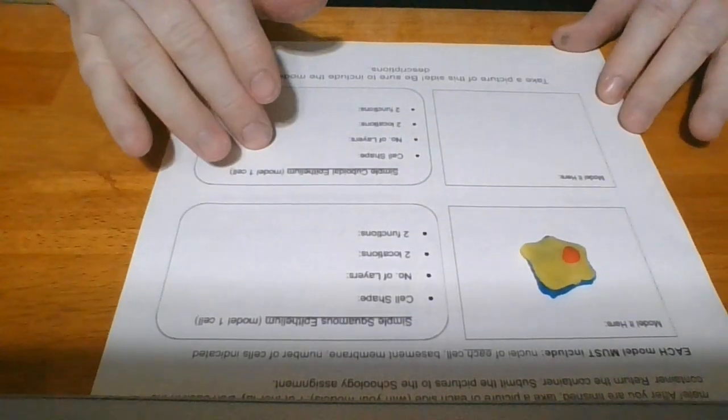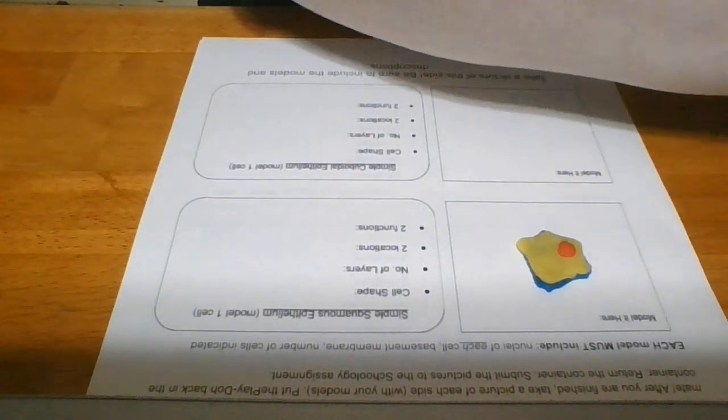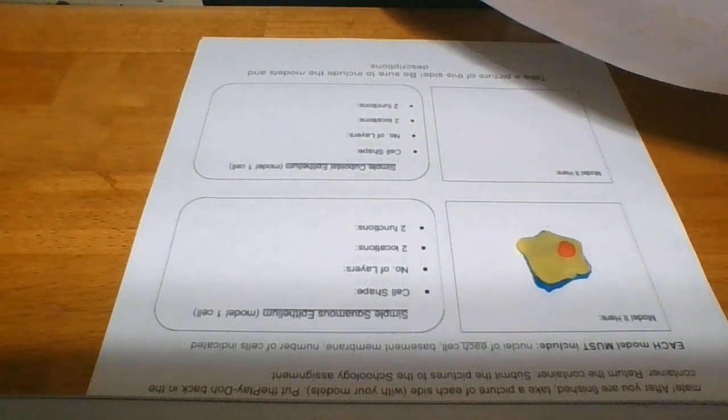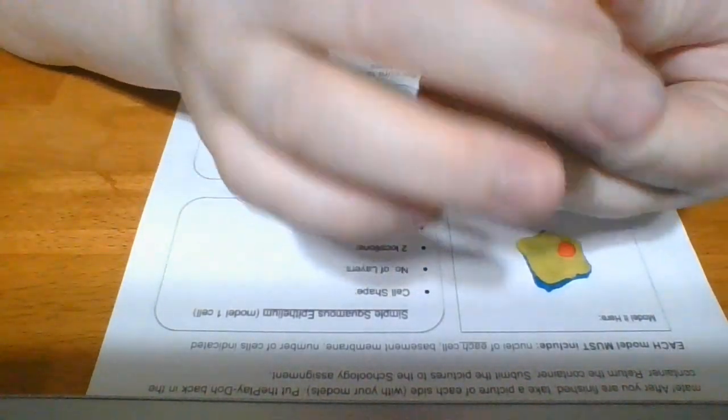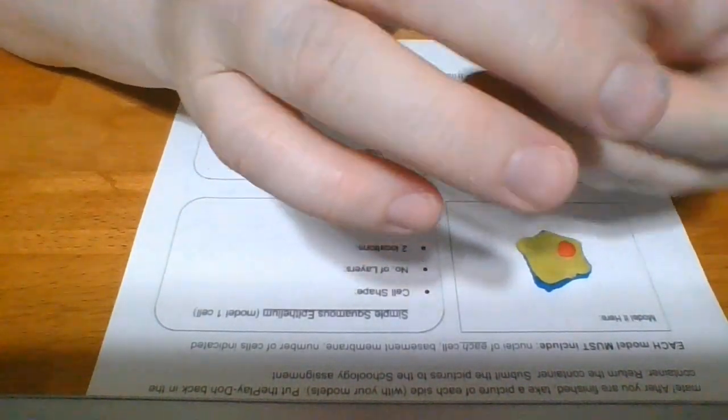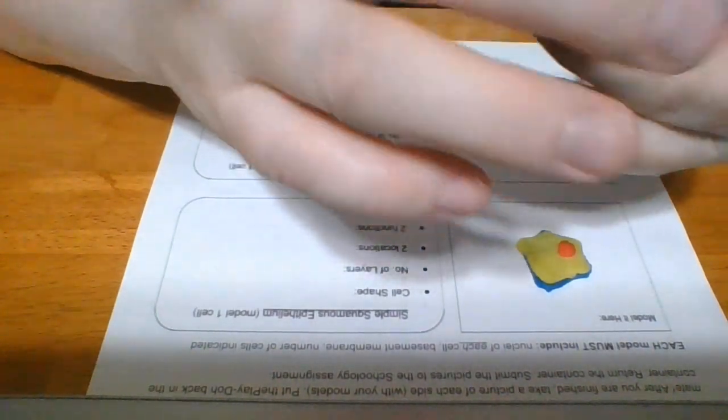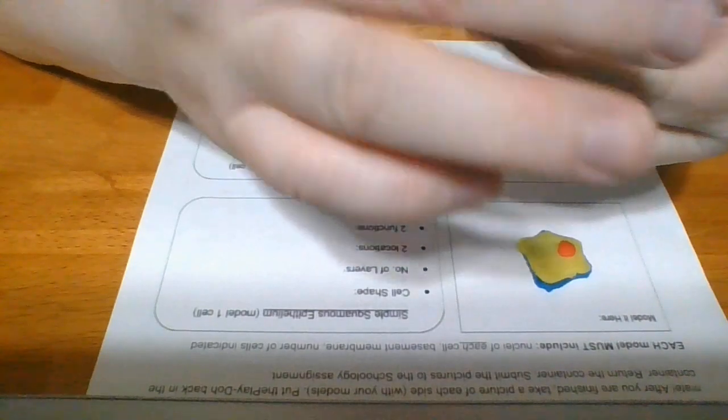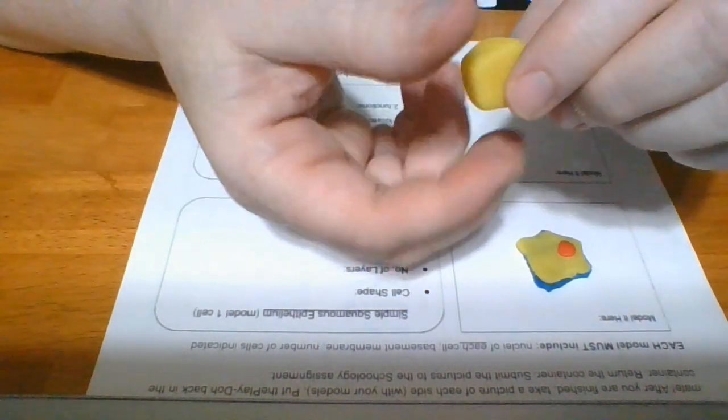Now, if you see next, simple cuboidal, and again, I'm going to model one step. So I'm going to be consistent with color. So what I'm going to do this time is take some of the yellow, which I used for the cell last time, and I'm going to kind of make a cube. All right, so there we go. There's a cube.